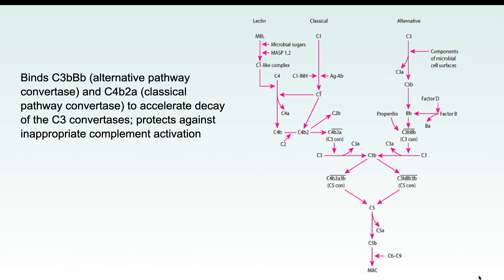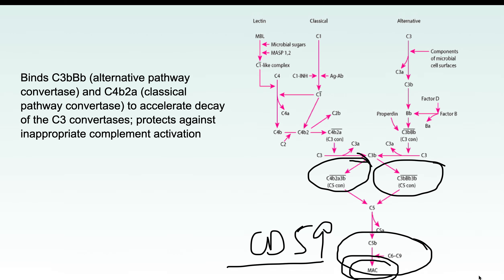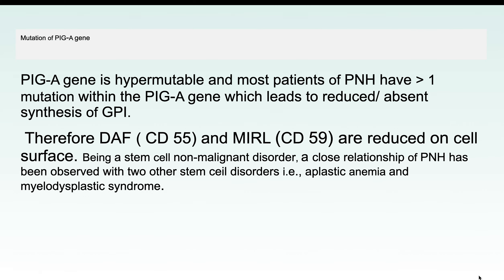CD59 prevents formation of the Membrane Attack Complex (MAC). CD55 acts on C3 convertases — via the alternate or classical pathway, it prevents formation of C3 convertases, thereby halting further complement activation. When there is loss of expression of CD55 and CD59, the complement system gets inappropriately activated, leading to lysis of RBCs.